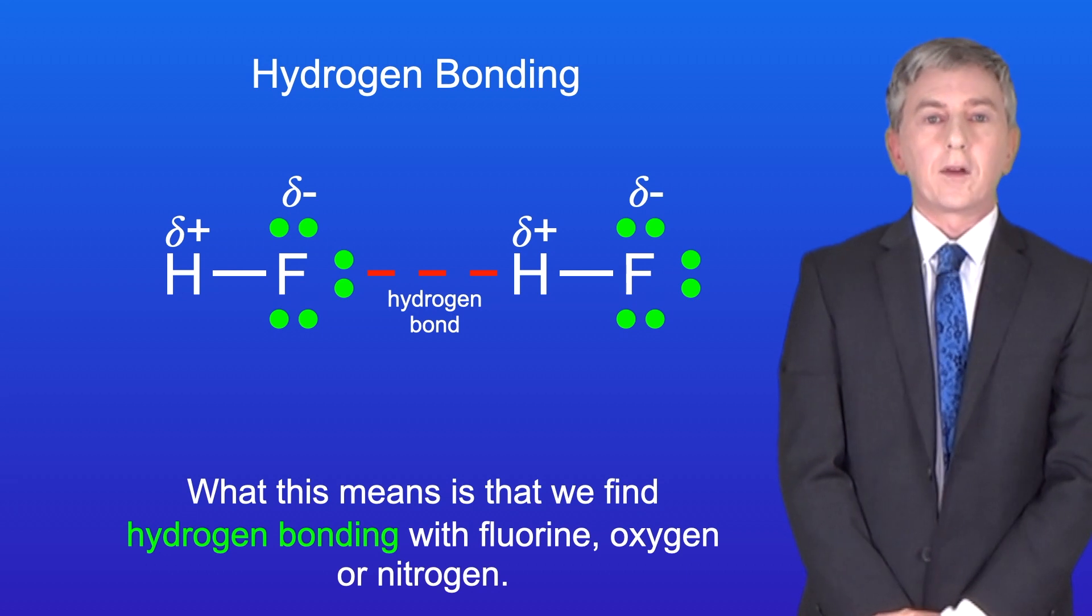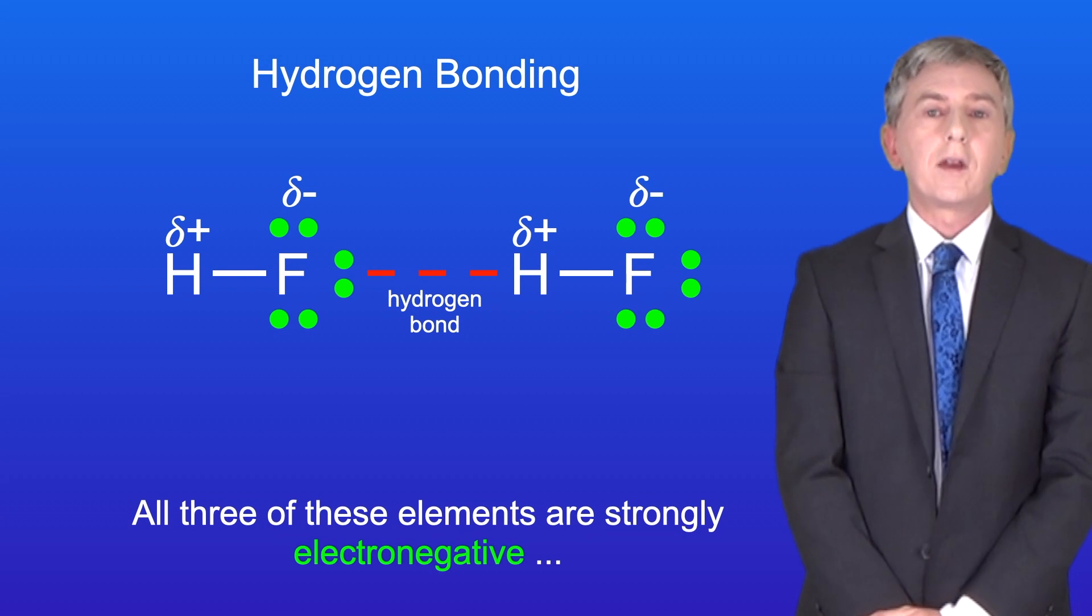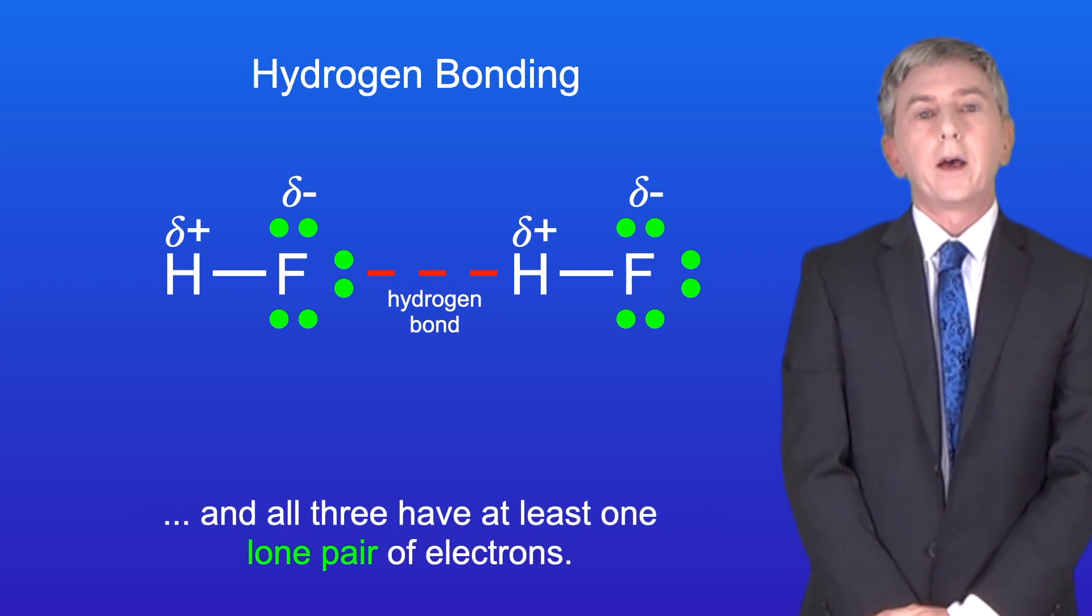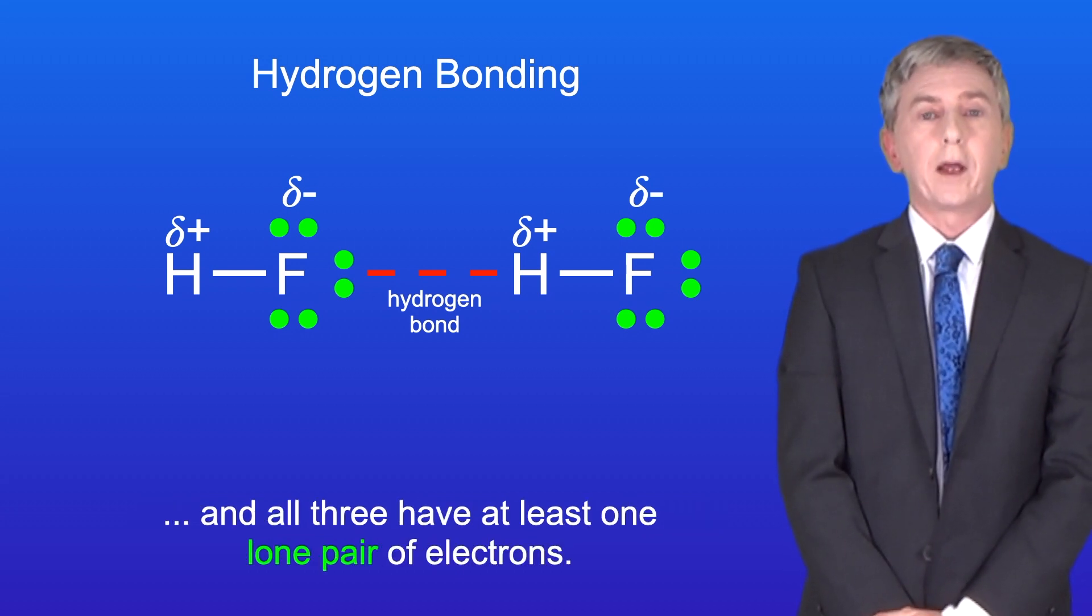What this means is that we find hydrogen bonding with fluorine, oxygen, or nitrogen. All three of these elements are strongly electronegative, and all three have at least one lone pair of electrons.